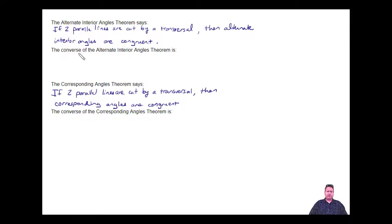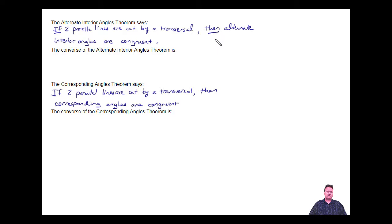I've already written out the alternate interior angles theorem and the corresponding angles theorem. Those say: if two parallel lines are cut by a transversal, then alternate interior angles are congruent, and corresponding angles are congruent. Pay attention to the wording in the if and the then, because a converse just turns this around. If alternate interior angles are congruent, then two lines are parallel — that's how the converse is written.